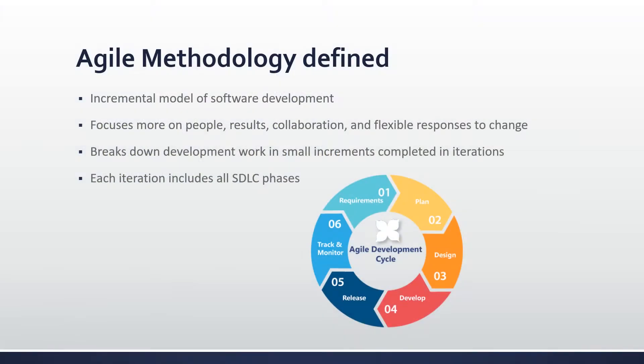To begin, let's define agile methodology. Agile methodology is a type of incremental model of software development based on principles that focus more on people, results, collaboration, and flexible responses to change. Instead of planning for the whole project, it breaks down development work into small increments completed in iterations or short timeframes. Each iteration includes all software development lifecycle phases, with a working product delivered at the end. After several iterations, a new and updated product is released.